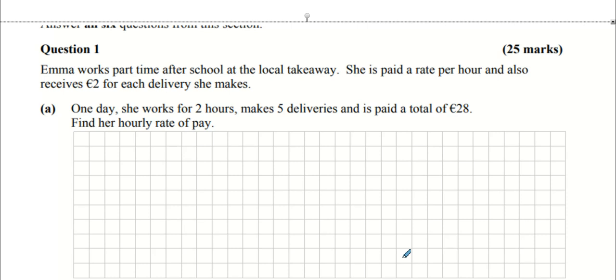Emma works part-time after school at the local takeaway. She's paid her rate per hour and also receives two euros for each delivery she makes. One day she works for two hours, makes five deliveries, and is paid a total of £28. Find her rate of pay.